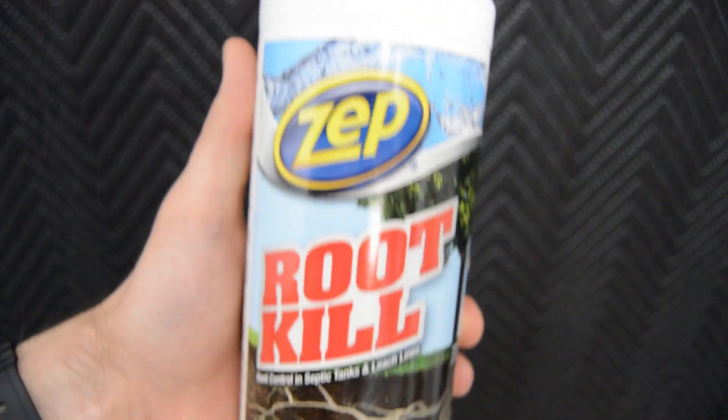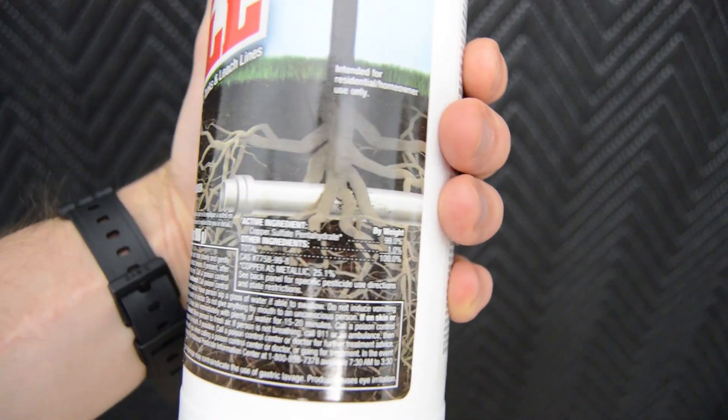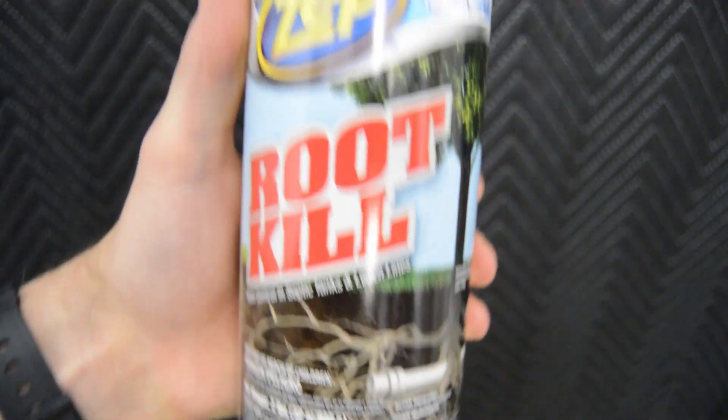These are the chemicals we'll need to make this electrolyte. Zep root kill. This will provide the copper sulfate needed to provide the initial dissolved copper ions in the electrolyte.